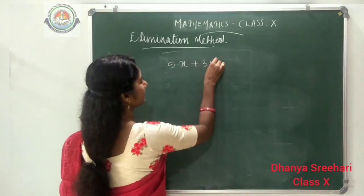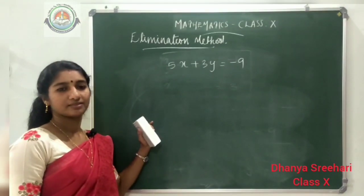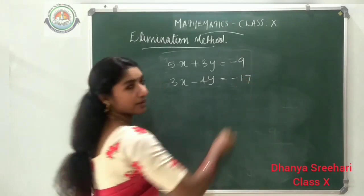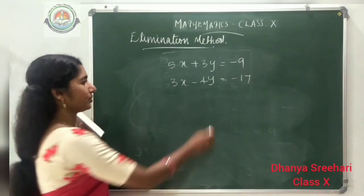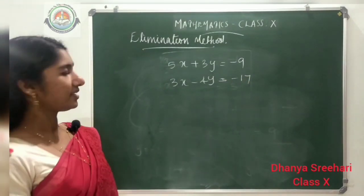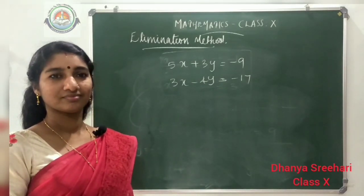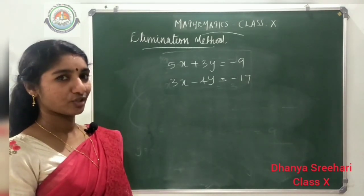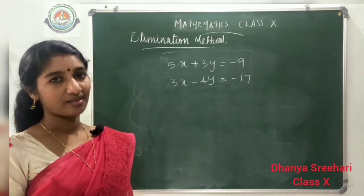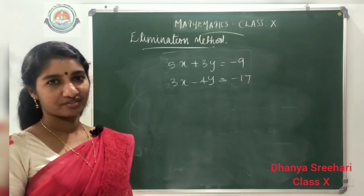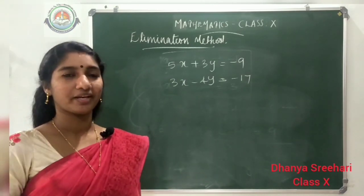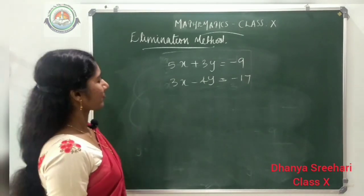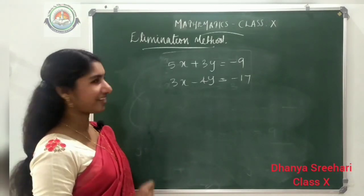One more question: 5x plus 3y equals minus 9, and 3x minus 4y equals minus 17. We have two equations. Looking at the coefficients of x and y — are any x or y coefficients the same? They are not equal; they have different coefficients. So while adding or subtracting, no variable will be eliminated. What can we do? We can apply one trick.